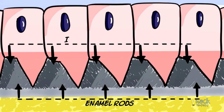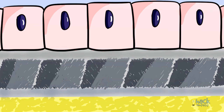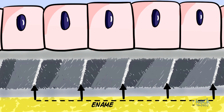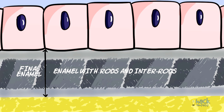As enamel matrix continues to be secreted, not only does the distal portion of the Tomes' process elongate, but it also gradually becomes thinner and gets squeezed out of existence. Once this happens, there is a thin space at the junction between the rod and inter-rod enamel that is filled with organic material to form the enamel sheath. Once the distal portion disappears, the ameloblast again resembles its initial form, and thus the last increment of enamel formed has no enamel rods. The final enamel is therefore composed of rod and inter-rod enamel sandwiched between two layers of rodless enamel.